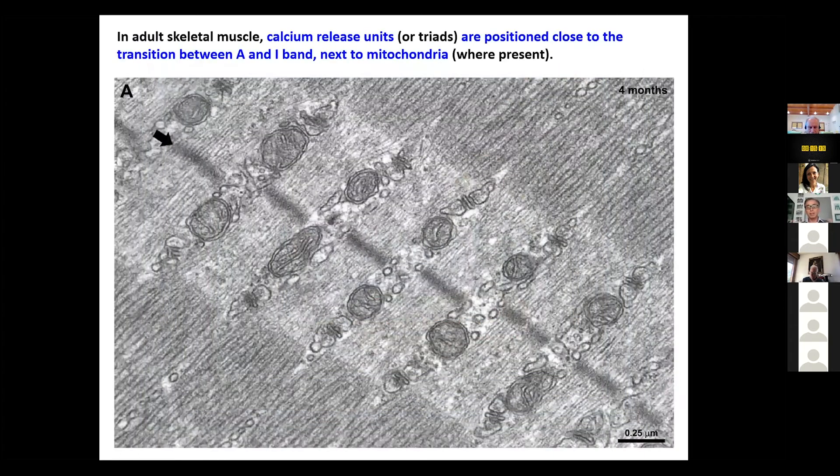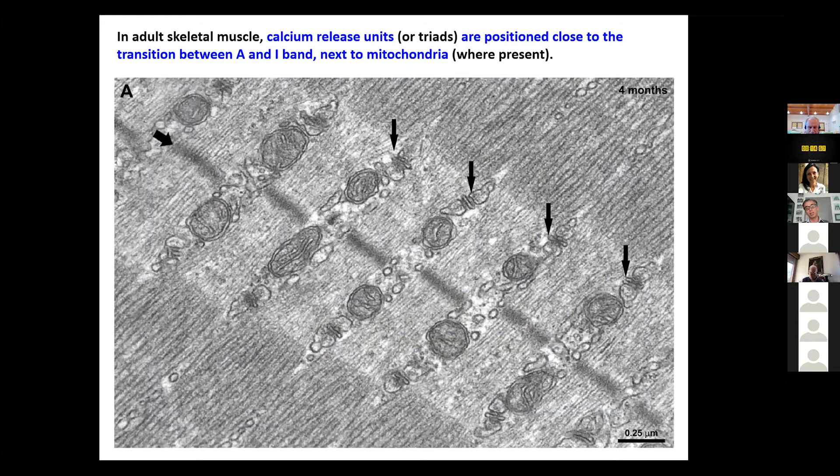We started to study this around 2005, 2006. With people in the lab at the time, Simona was already there, and these are pictures by Simona. We found that if you look at fast twitch fibers, and what I pointed here are the triads, the calcium release sites, the mitochondria are just located next to them, always in the same position. Mitochondria are next to the calcium release unit associated to them, always on the side towards the Z line. Most mitochondria are at the I band in fast twitch fibers.